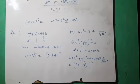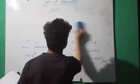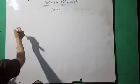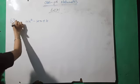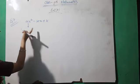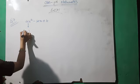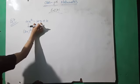Now move to question number seven: 4x square minus 12x plus k is a perfect square — find the numerical value of k. We have to find first a and b. We can write 4x square as 2x whole square, so a equals 2x. The term minus 12x must be the 2ab term, so minus 2ab equals minus 2 into 2x into b.